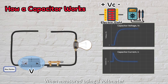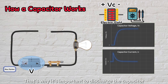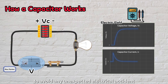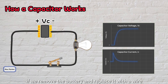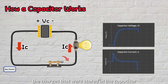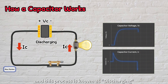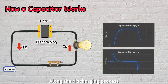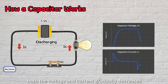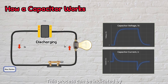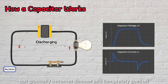When measured using a voltmeter, we will still get a voltage reading because the charges are still present. That's why it's important to discharge the capacitor before handling it, to avoid any unexpected electrical accident. Subsequently, if we remove the battery and replace it with a wire, the charges stored in the capacitor are unleashed, the current starts flowing again, and this process is known as discharging. Along the discharging process, both the voltage and current gradually decrease until all the charges at the capacitor's plates are completely released. This process can be indicated by the bulb initially shining brightly but gradually becoming dimmer and completely going off.